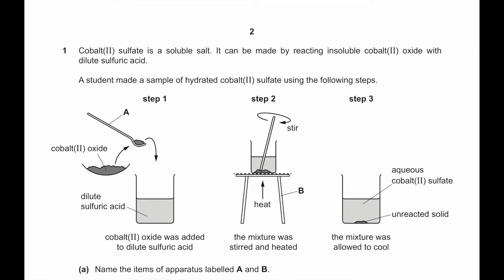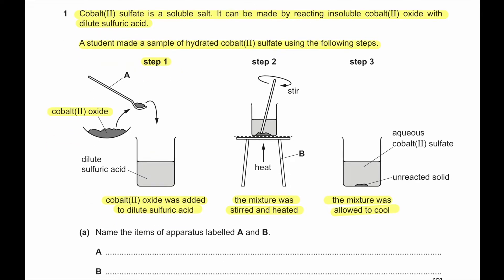Question number 1. Cobalt 2 sulfate is a soluble salt. It can be made by reacting insoluble cobalt 2 oxide with dilute sulfuric acid. A student made a sample of hydrated cobalt 2 sulfate using the following steps. Step 1: the student added cobalt 2 oxide into dilute sulfuric acid. Step 2: the mixture was stirred and heated, then allowed to cool.